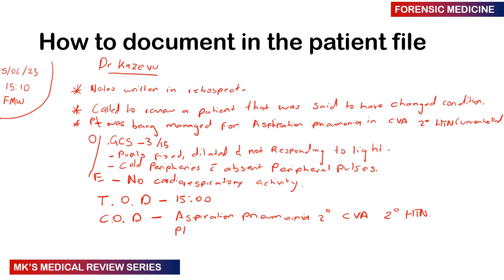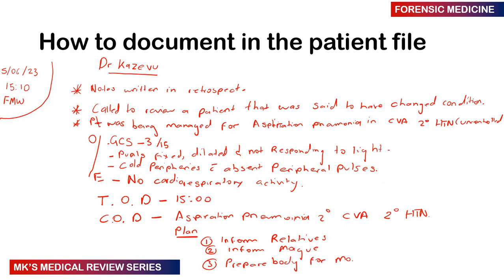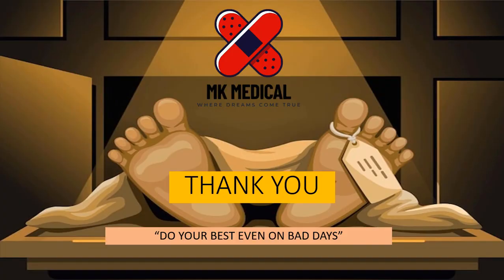Then write your plan. Number one: inform the relatives. Number two: inform the morgue that they will be receiving a body. Number three: prepare the body for the morgue. Number four: may his or her soul rest in peace. Then sign, and your job is done. Make sure you always include the time of death and the cause of death. I really hope this helped shed light on how we examine patients and certify that a patient has actually died.